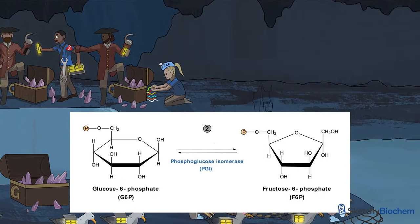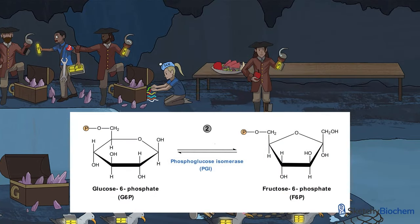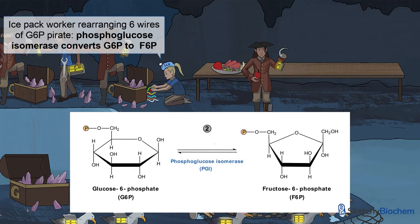Next, phosphoglucose isomerase turns G6P into fructose-6-phosphate, aka F6P. Our iced-up isomerase worker is rearranging six wires on the inside of our hook-handed sea hero to get him ready for his fruit feast — much like how phosphoglucose isomerase rearranges the six carbons of G6P into F6P.